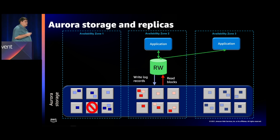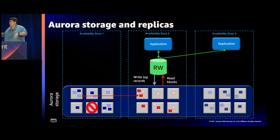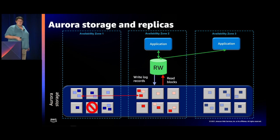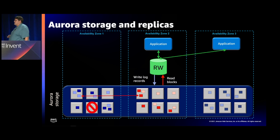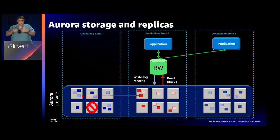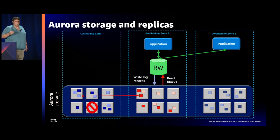What if we lose an entire storage server? It's logically the same process — the workload spreads out across multiple other servers, or we provision new servers and add them to the Aurora fleet. Either way, you went down to five out of six, we make a copy, get it up and running, spread it out, and it just works. Same thing if a storage node gets busy — we start spreading the load out across other storage nodes transparently. The storage fleet's intelligence really makes the difference in Aurora.